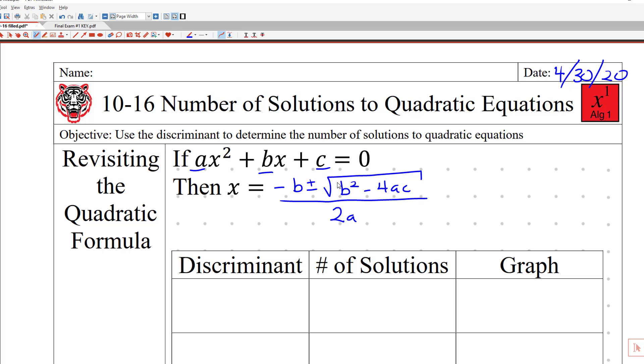This is the quadratic formula that we talked about in our last lesson yesterday, 10-15. The discriminant is actually part of the quadratic formula. So what we want to analyze right here is this b² minus 4ac. The name of that equation, that formula, is the discriminant.